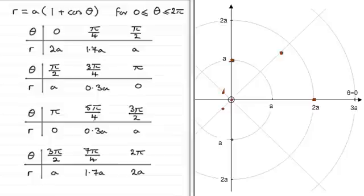And again if we just plot these points on the polar graph. So what we've got then is when theta equals 7 pi upon 4 radians, that's along this line here, r equals 1.7a, same as what we had up here, so we're going to have a point somewhere around there.